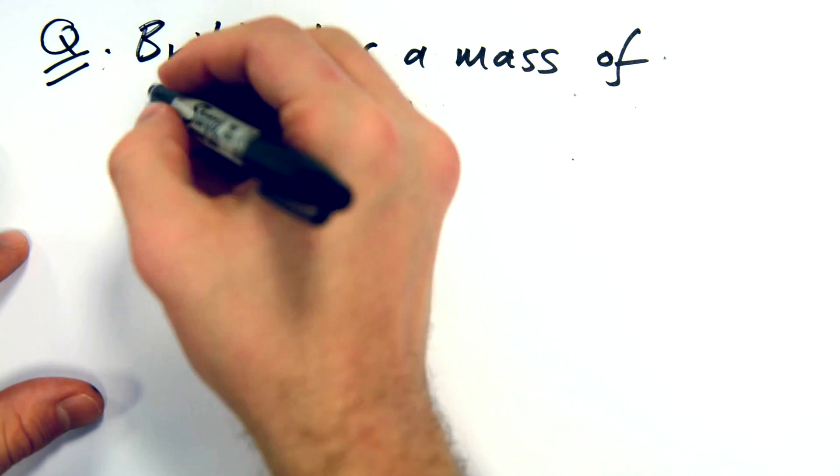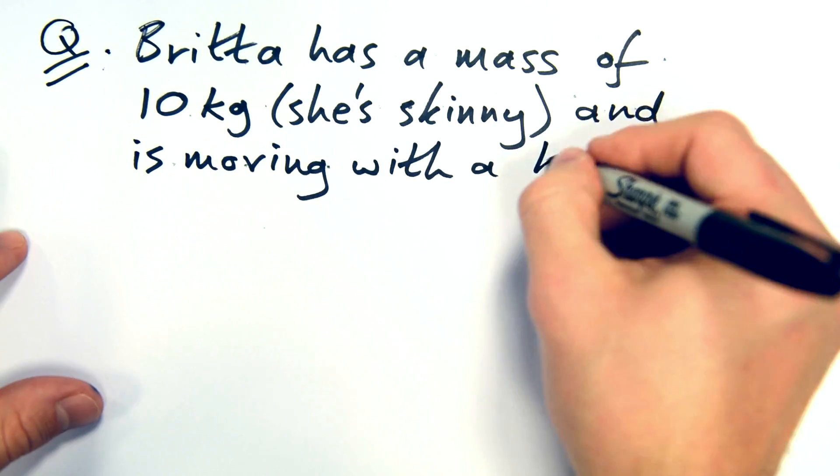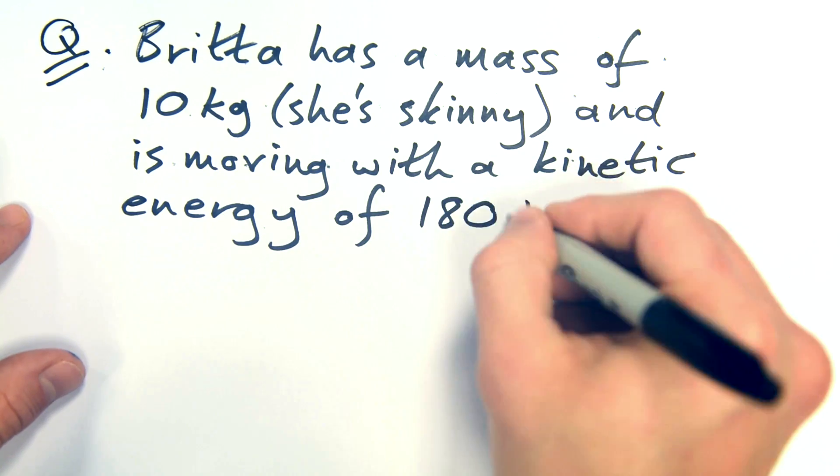Okay, let's try another one. Britta has a mass of 10 kilograms and she's moving with a kinetic energy of 180 joules. What is her speed?